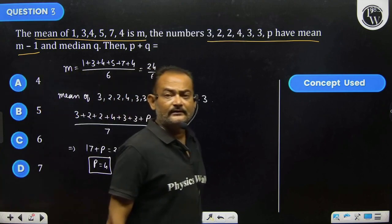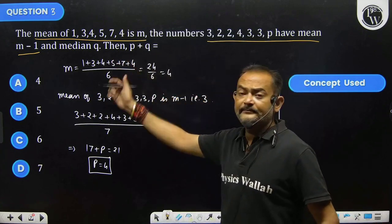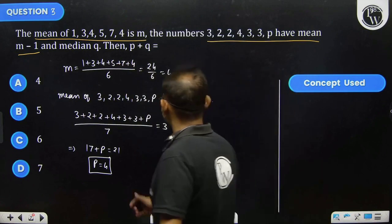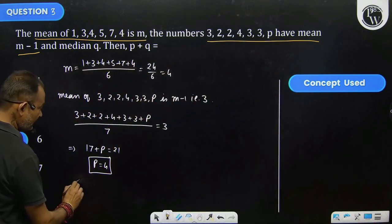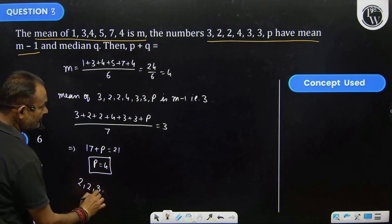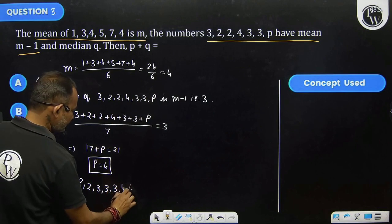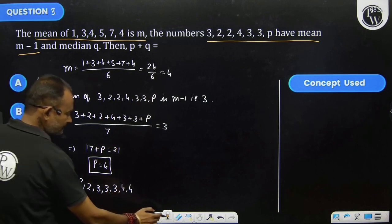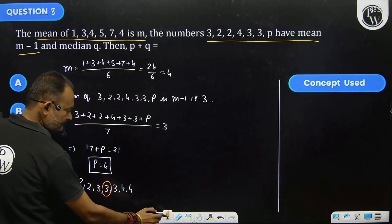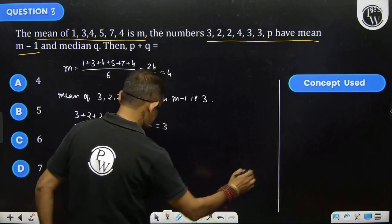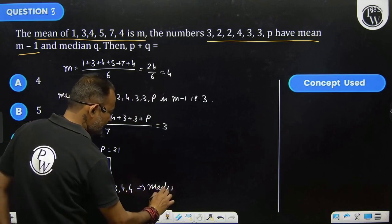Their mean is 4. Then for median we need to find p and q where q is the median. To find median, first arrange this data in ascending order: 2, 2, 3, 3, 3, 4, and p is also 4. Then the middle term, this is the middle term, this is median, which is given q.